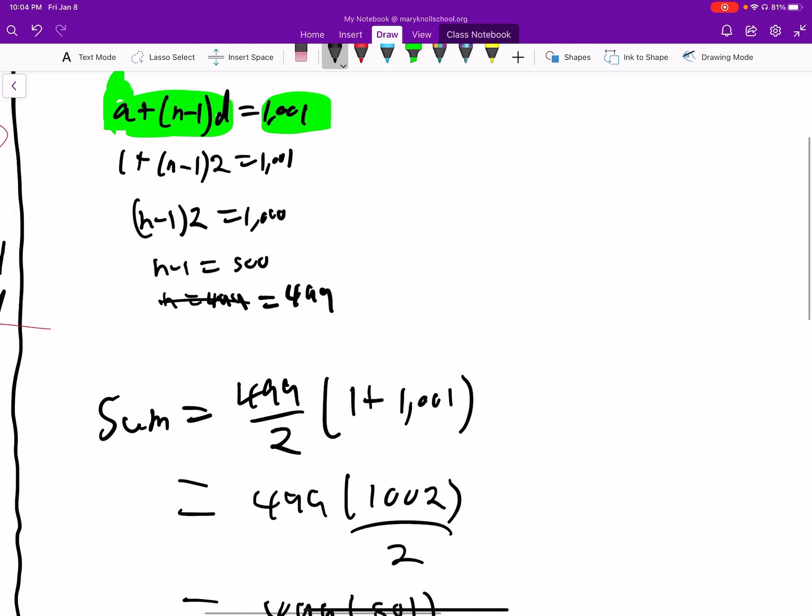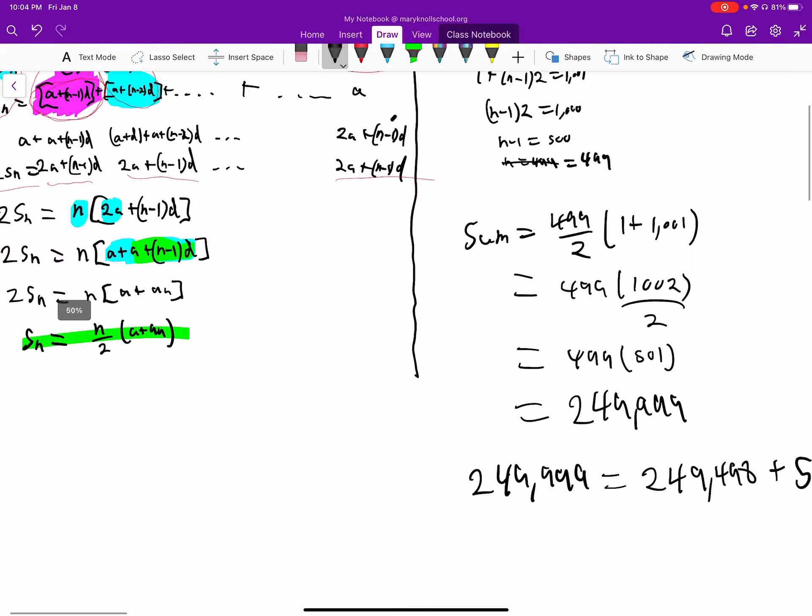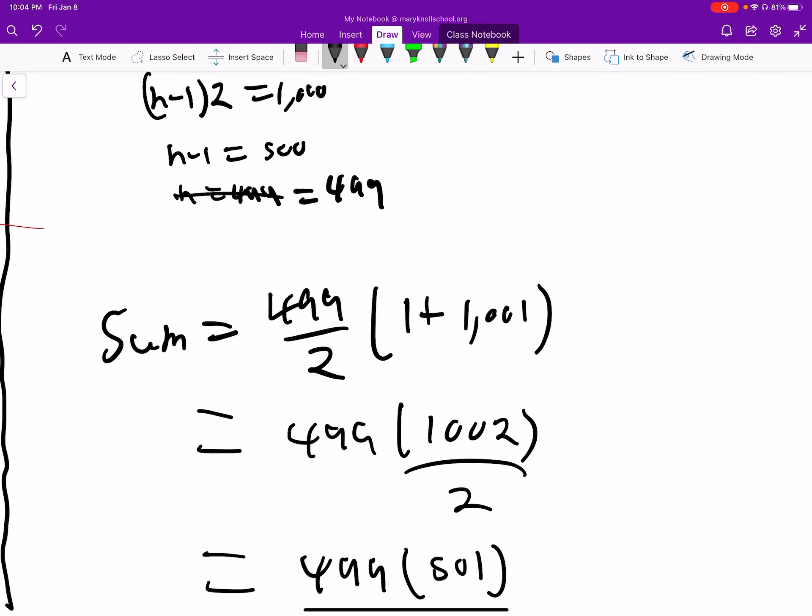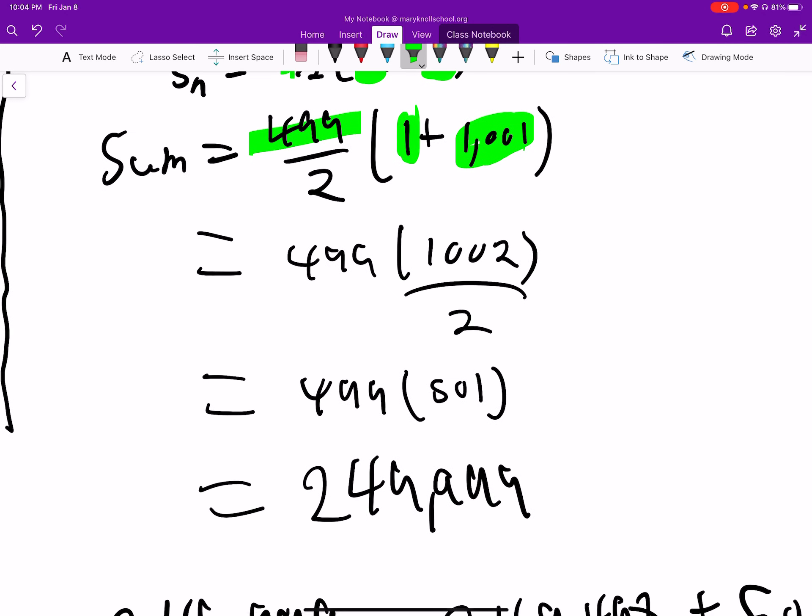Okay, so then we know the sum, we just plug in. We have the sum formula, we use it from here. SN equals N over 2 times (A1 plus AN). Okay, so then here is AN. And A1 is 1, N is 499. And then we just solve. So the sum is 245,000.